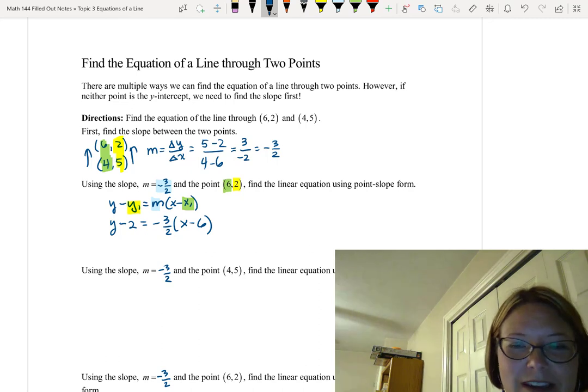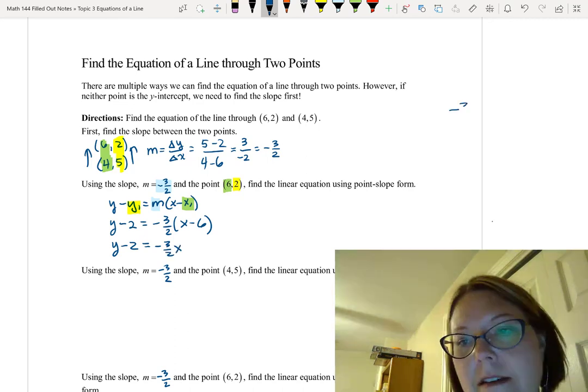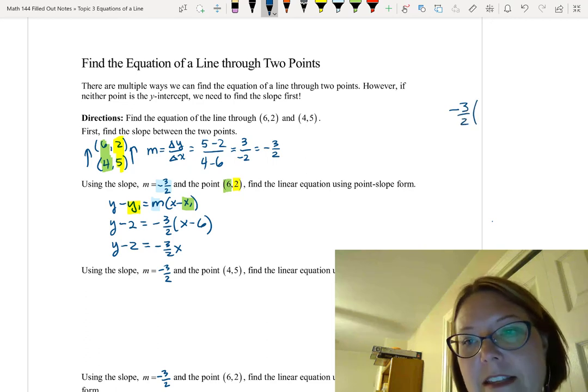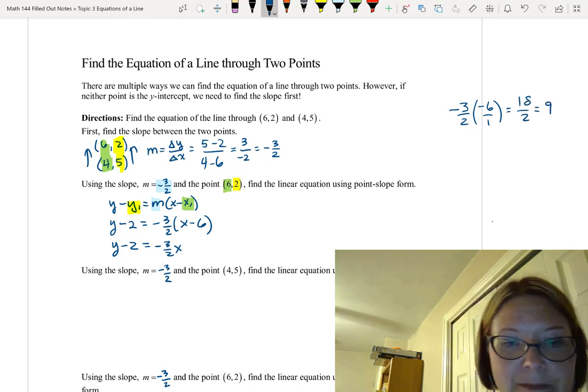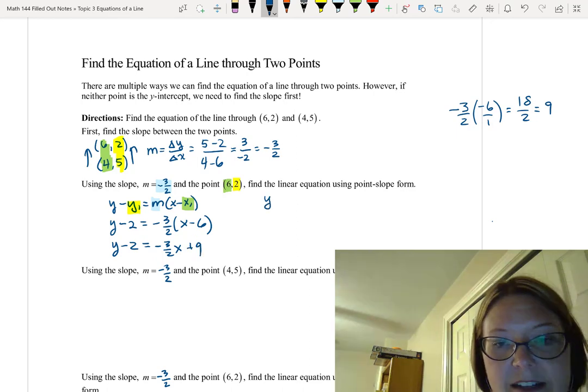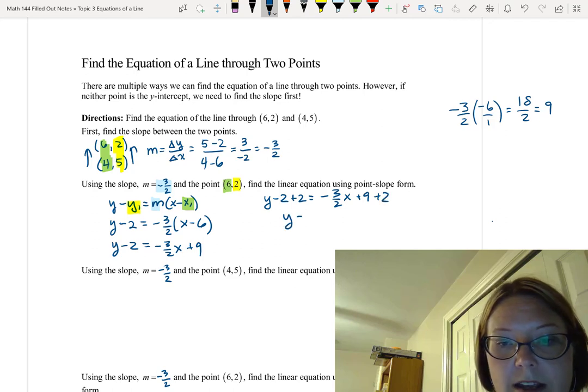Let's go ahead and simplify this so that we can in the end compare all of our equations. Let's do the distribution of negative 3 halves. That gives us y minus 2 on the left, no change there, equals negative 3 halves x, and then I need to do negative 3 halves times negative 6, and that's like a negative 6 over 1. That's a positive 18 halves or just 9. So it's negative 3 halves x plus 9 on the right-hand side. Finally, I'm going to add 2, so y minus 2 plus 2 equals negative 3 halves x plus 9 plus 2. That gives us y equals negative 3 halves x plus 11.